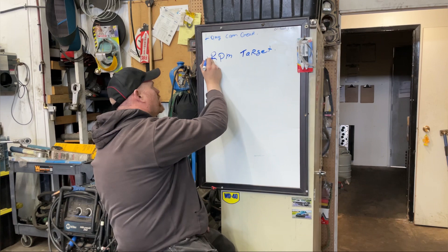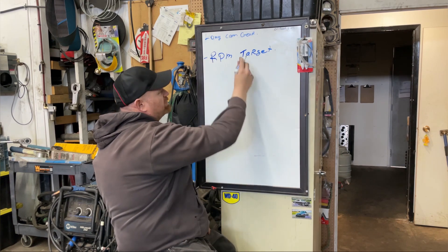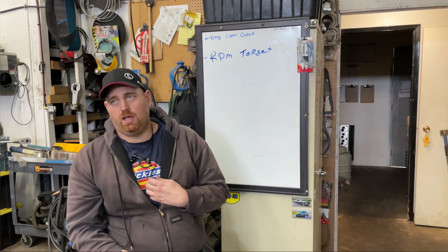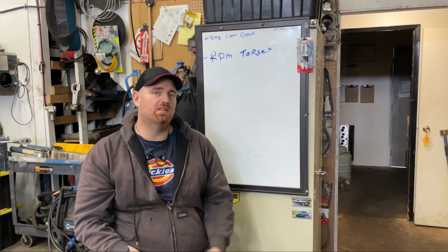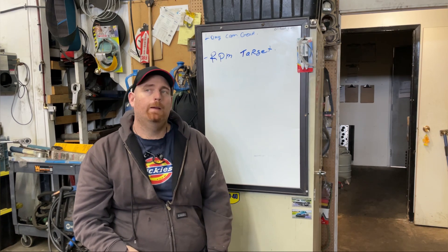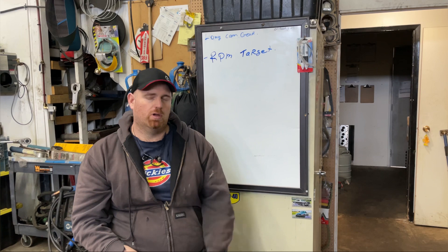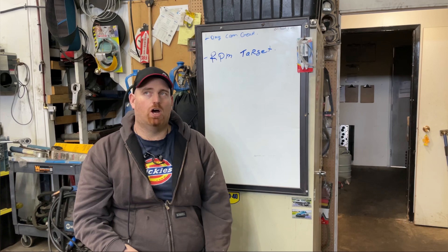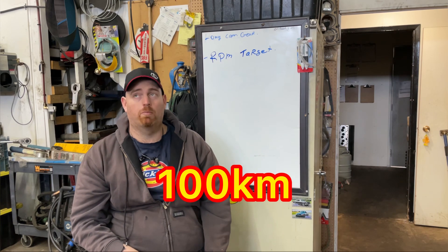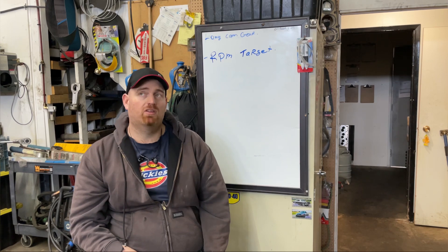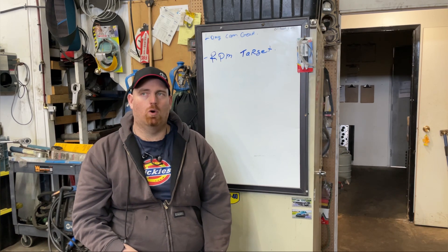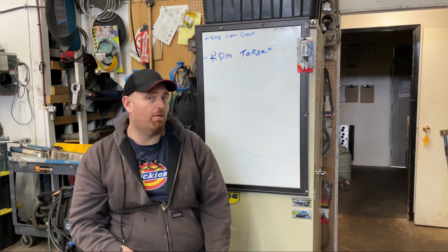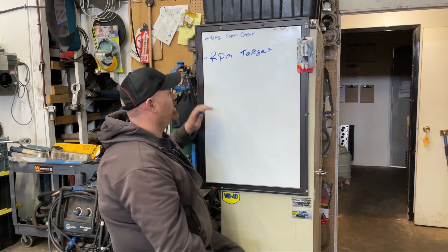You need to know your RPM target that you want to be at on the highway, and some of this is based off how fast you're driving. Not everywhere is the same speed. Here in Alberta, Canada, our highway speed is about 68-70 miles an hour. In Ontario, general highway speeds are 110 kilometers an hour, which is about 65 miles an hour, but general roads are 80 kilometers an hour, which is only 45 miles an hour. So you need to know your target RPM.